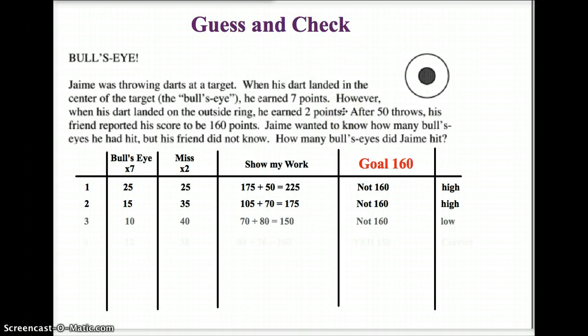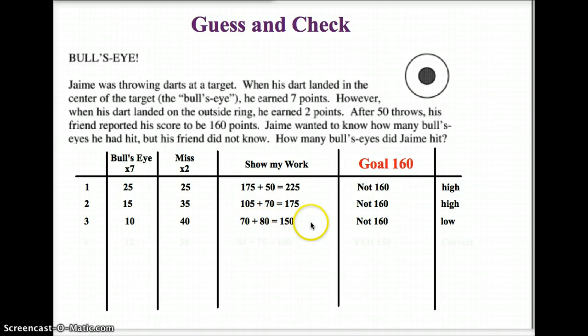Let's try another guess, even lower. Maybe I only got 10 bullseyes and 40 misses. Well, 10 times 7 is 70, and 40 times 2 is 80. 70 plus 80 is 150. I'm still not at 160 — I'm a little bit too low. The good news is I'm somewhere between 10 and 15.